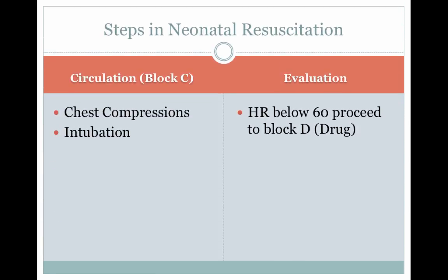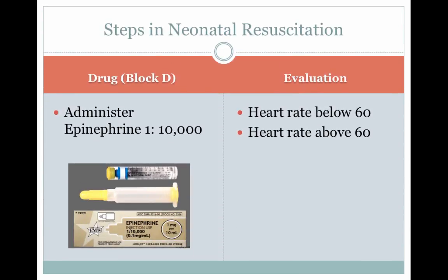Block C — Chest compressions. When beginning chest compressions, intubation is strongly recommended. After a cycle of chest compressions and positive pressure ventilation, evaluate the infant again. If the heart rate is still below 60 despite ventilation and chest compressions, proceed to Block D — Drugs. Administer IV epinephrine while continuing PPV and chest compressions. If the heart rate rises above 60, chest compressions are stopped and PPV continues until the heart rate is above 100 and the baby is breathing. Supplemental oxygen can be administered based on oxygen saturation.